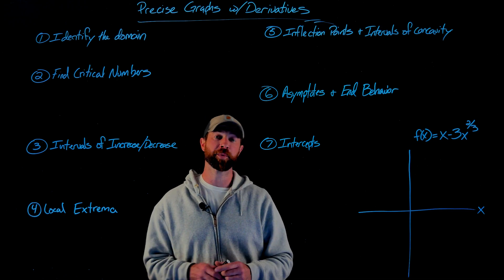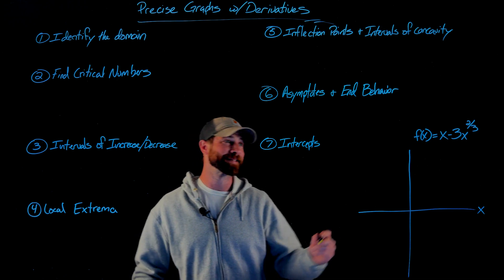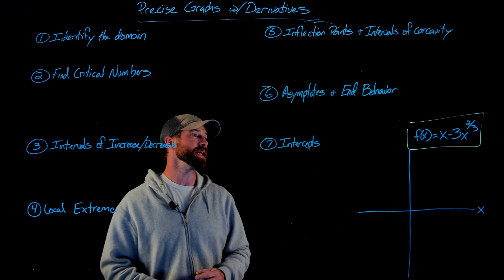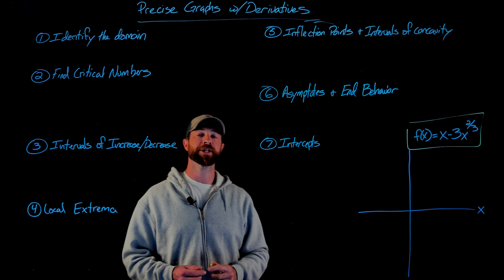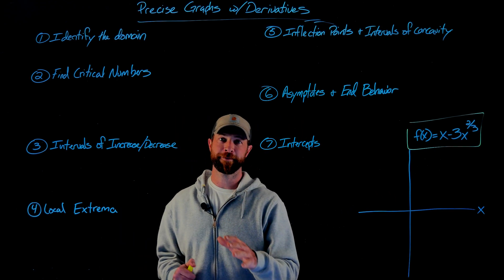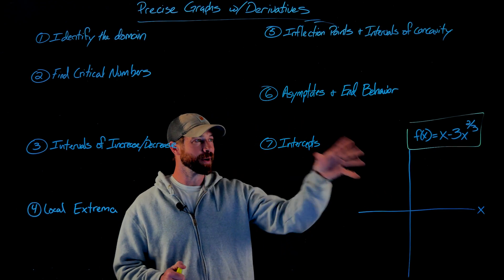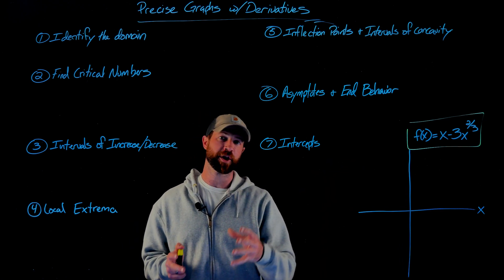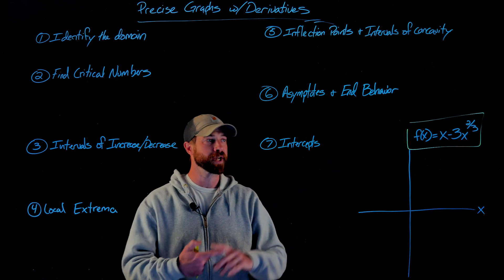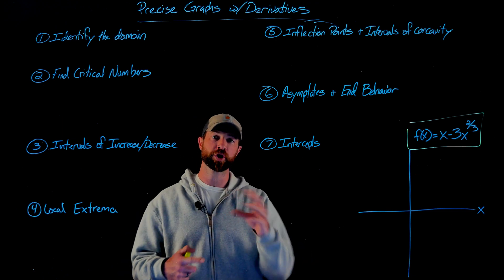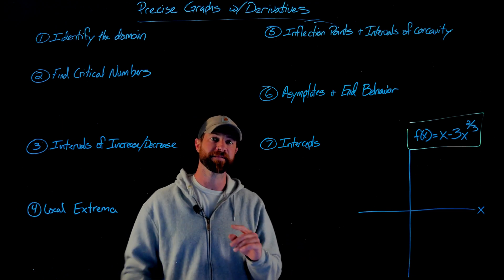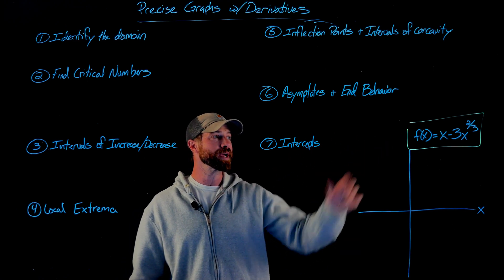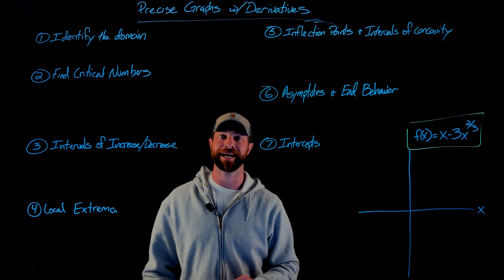The representative function we're going to graph today is f(x) = x minus 3x to the two-thirds. First and foremost, the domain for this function is all real numbers. There are no restrictions on the values you can input — no issues with taking the square root of a negative number. This is a cube root, and cube roots are okay with negatives, and there's no issue with division by zero.